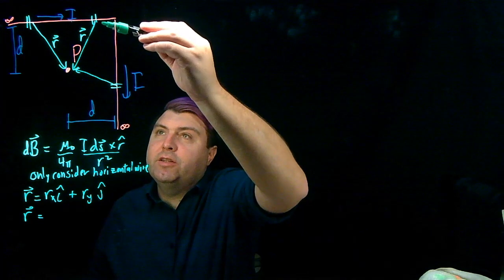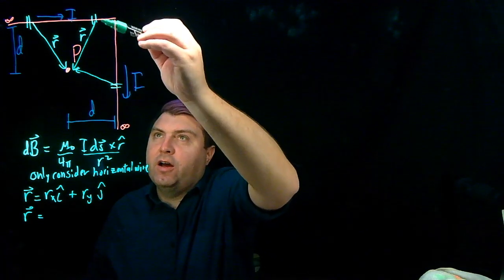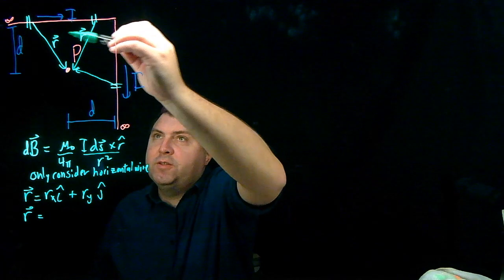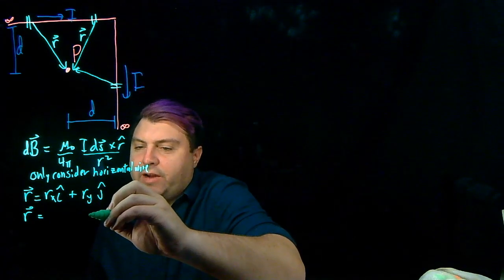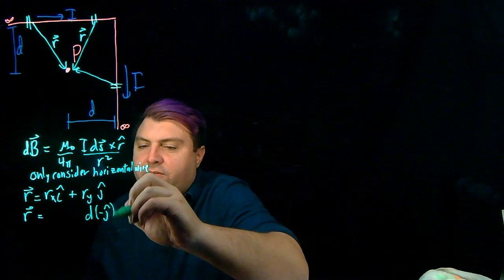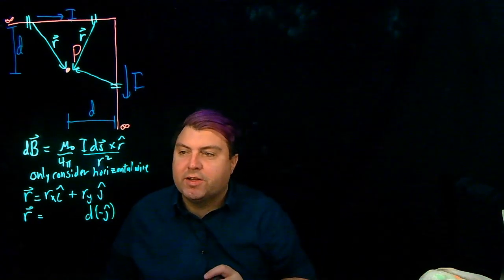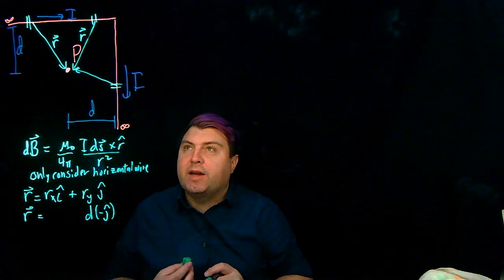Well, in the j hat direction, in the y direction, all of these pieces have to go a distance d down. So we can write this as either d negative j hat or negative d times positive j hat. Mathematically, they're the same.